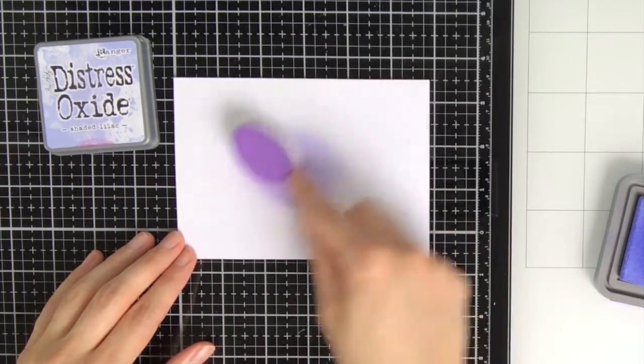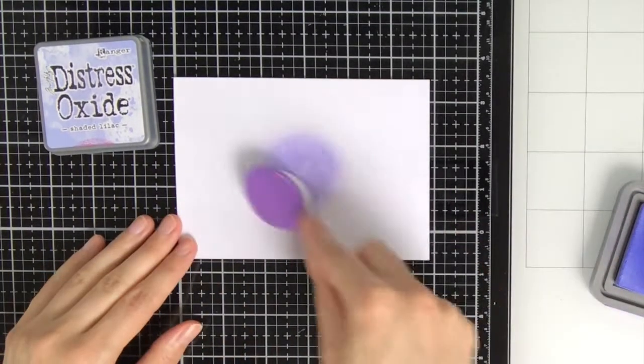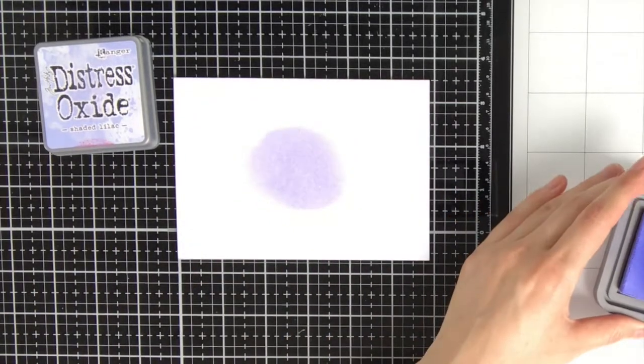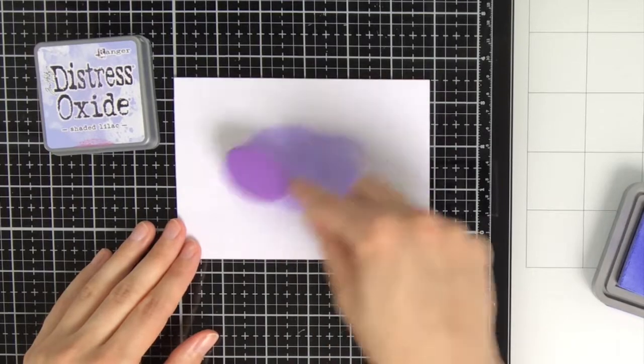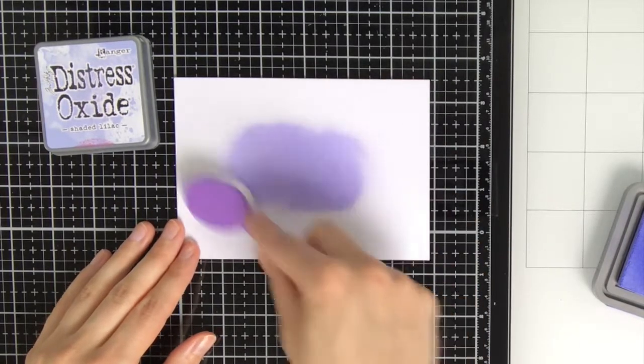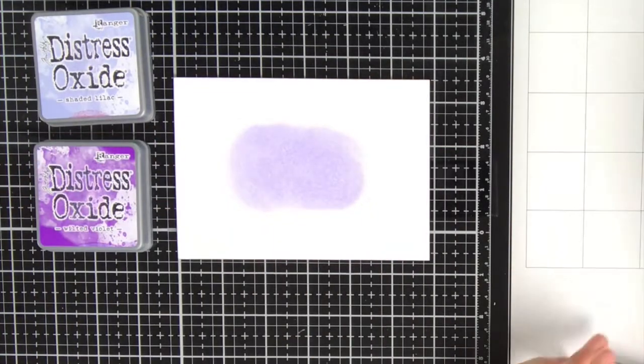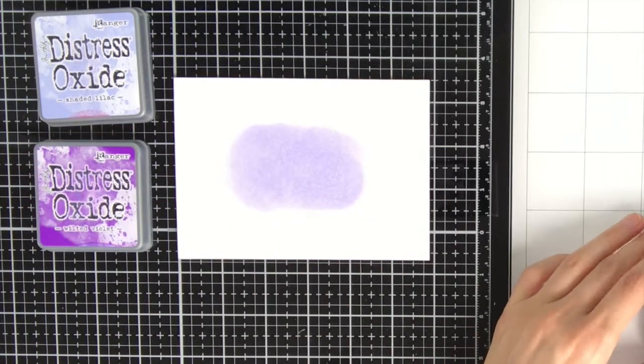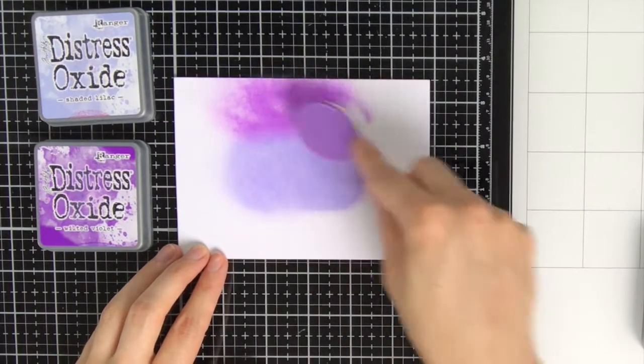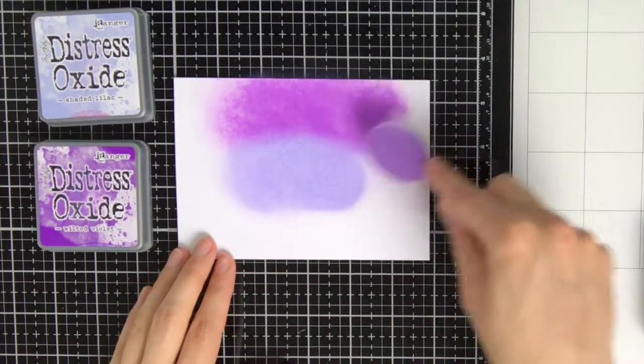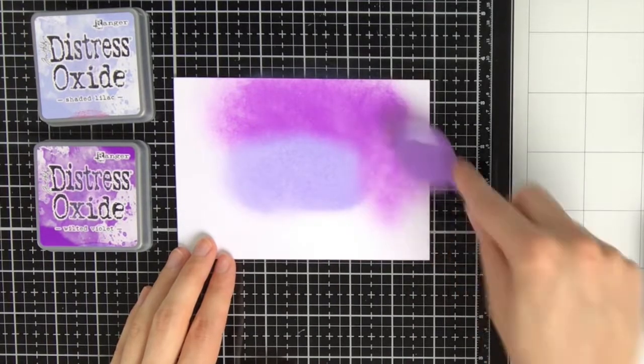As these little foxes do not really scream Halloween, I was brainstorming how I could turn these little foxes into a Halloween card. One of the basics to create a Halloween card is to use Halloween colors. So for my background I wanted to go for a completely purple background with a little bit of a glow in the centre.